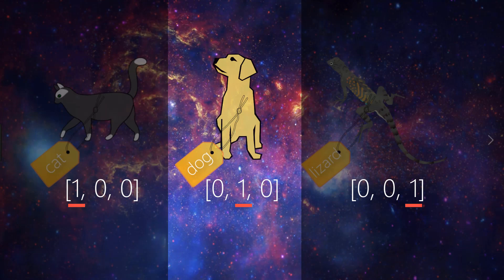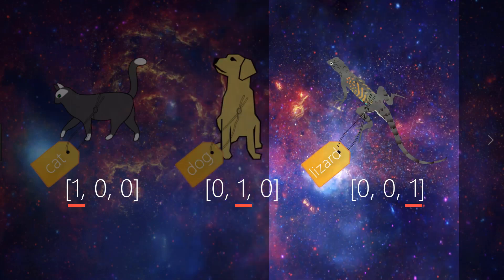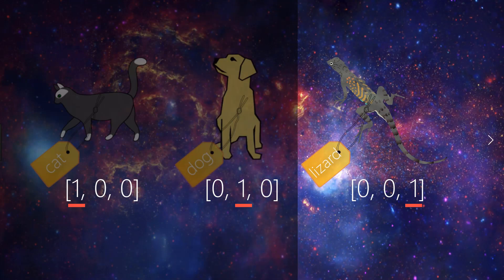Similarly, for dog, we see that the second element is a 1, while the first and third elements are 0s. And lastly, for lizard, the third element is a 1, while the first and second elements are 0s.